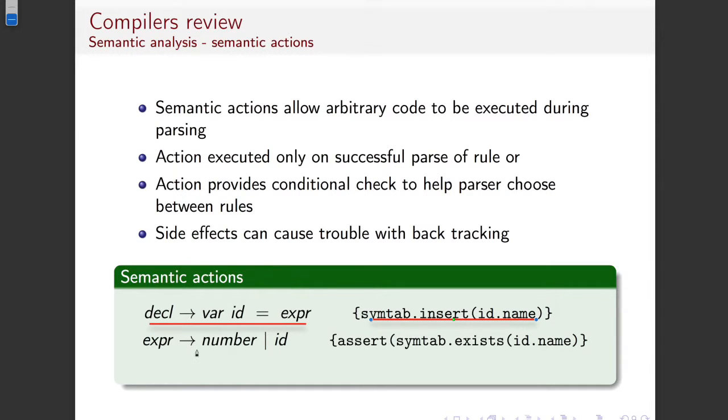When we come to use those, we can have other semantic actions which check other things. For example here, when we in an expression use an ID, we want to be able to check that that name has been defined somewhere. So we can assert that the thing exists in the symbol table. You also find that there are semantic actions which do other things. For example, I think antler has conditional semantic actions which allow you to actually derive which rules are appropriate.